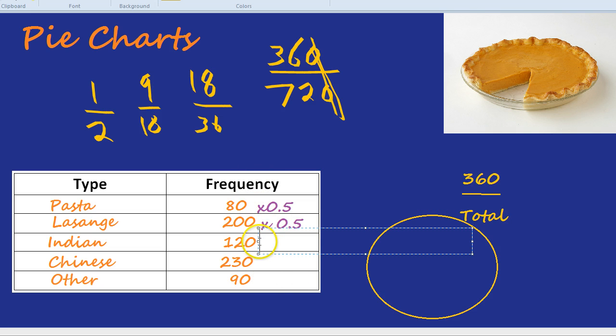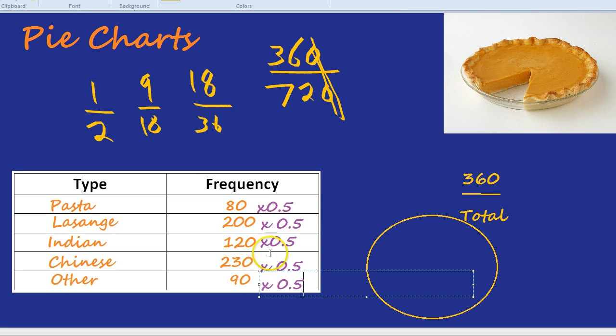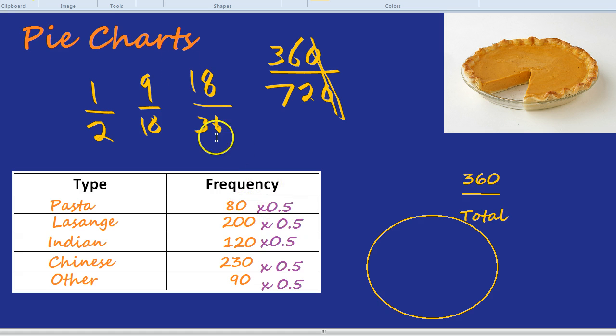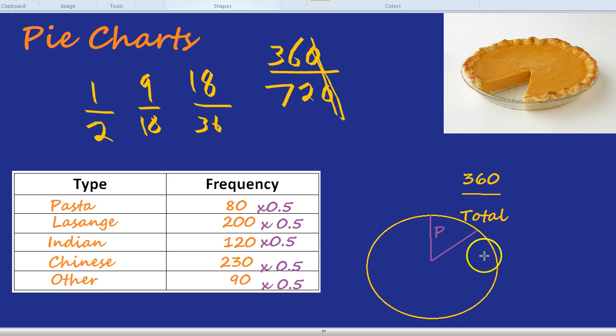Times by 0.5 for every single number. We don't have to write that all out, but you get the idea. We always times by that magic number that we get. Let's do that very quickly. So 80 times by a half is 40, so you'd do a 40 degree angle. You use your protractor and do a 40 degree angle and label that pasta. 200 times a half is 100, and you'd label that lasagna. And I don't have to finish it, but you'll notice it will fill in the whole circle.